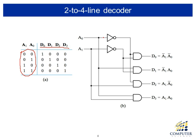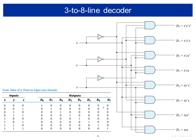We can implement such a function using simple logic gates. A slightly more complex example is a 3-by-8 line decoder with 3 inputs and 8 outputs. For 3 inputs we have 8 valid codewords, and for each codeword only 1 output is uniquely identified. This logic can be implemented using several AND gates.